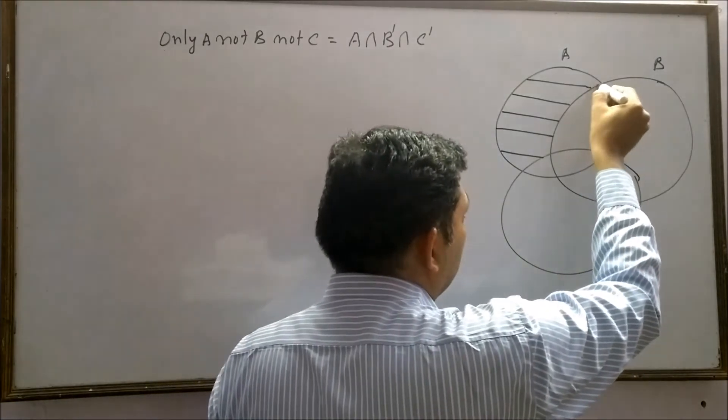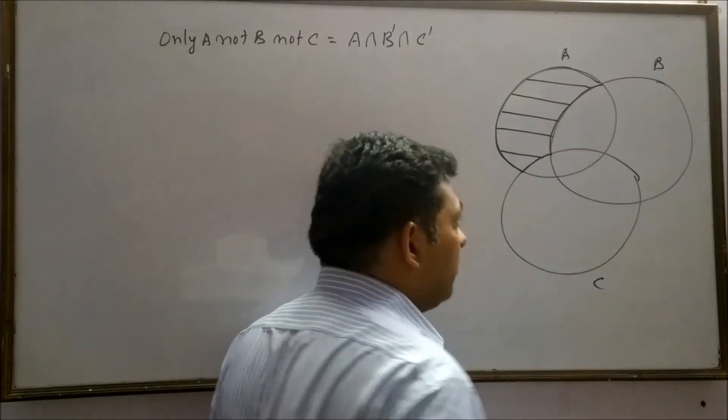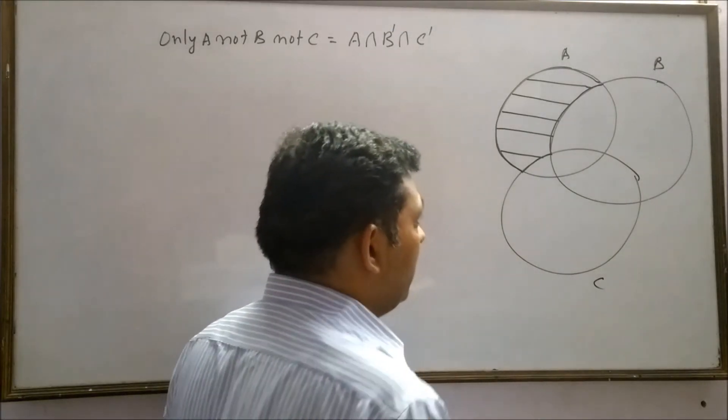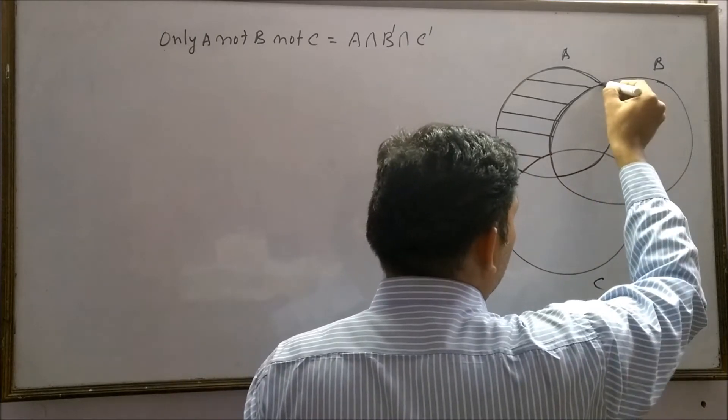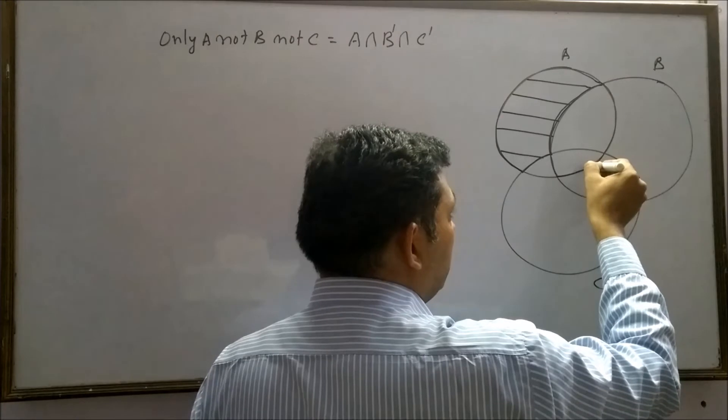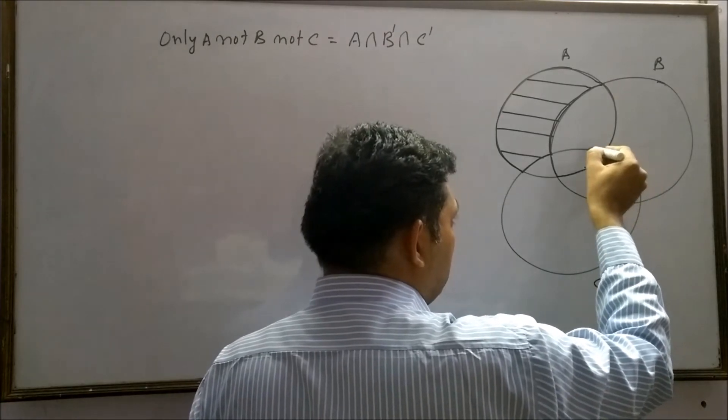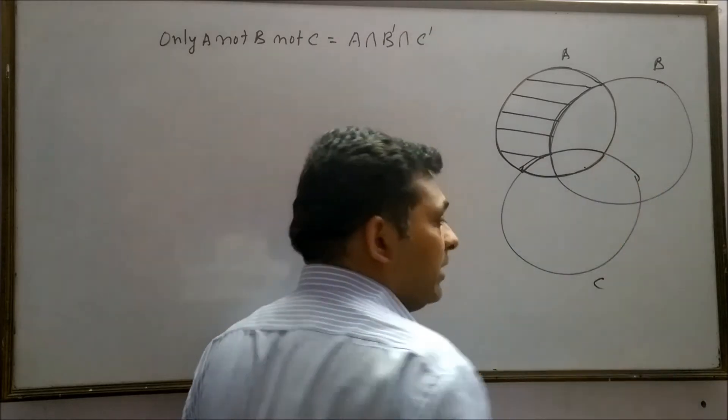This region can be obtained when we remove this portion which is A intersection B from the whole set A, as well as we have to remove this portion which is A intersection C.